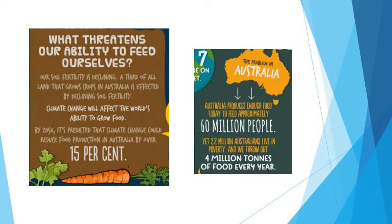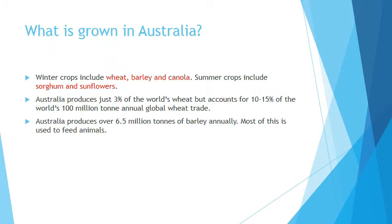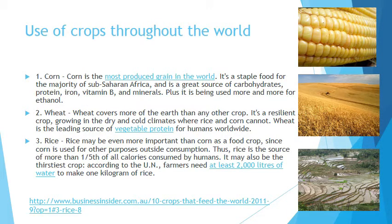It's also important to note that two thirds of the food we grow we actually export to countries like China. Big problems with why the world can't feed itself relate to soil fertility and climate change. In Australia, our winter crops are wheat, barley and canola, whereas in summer we grow sorghum and sunflowers. We produce 3% of the world's wheat, but that 3% actually accounts for 10 to 15% of what's being traded in the world. We also grow over 6.5 million tons of barley, most of which is used to feed animals and is exported.